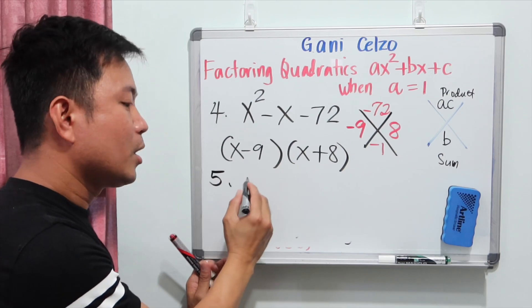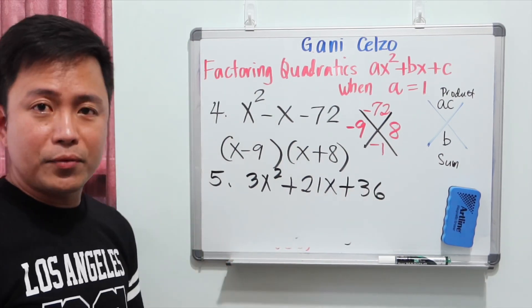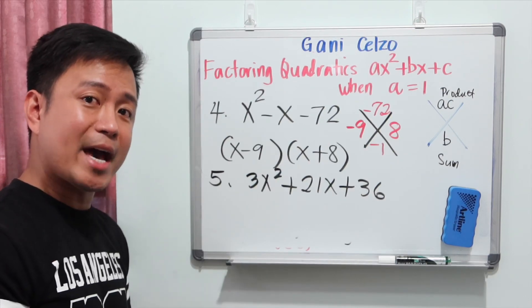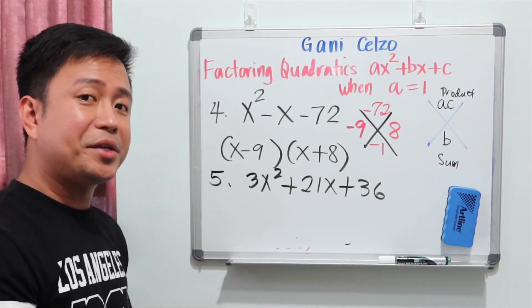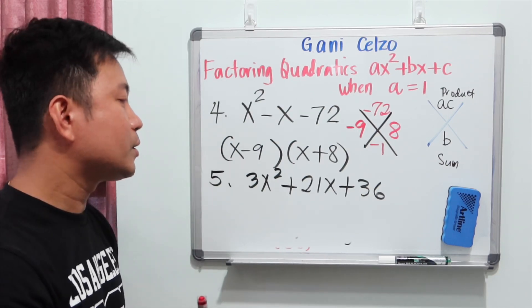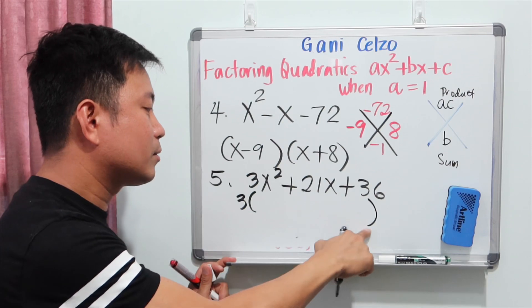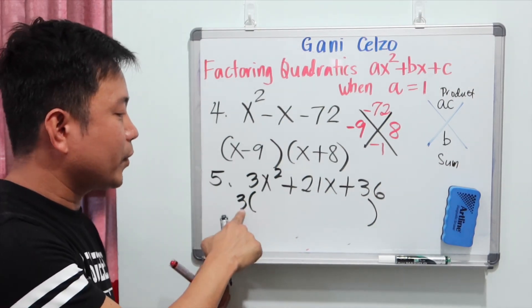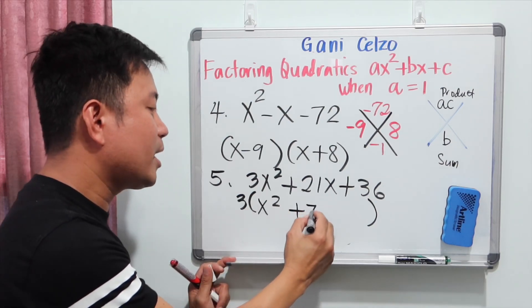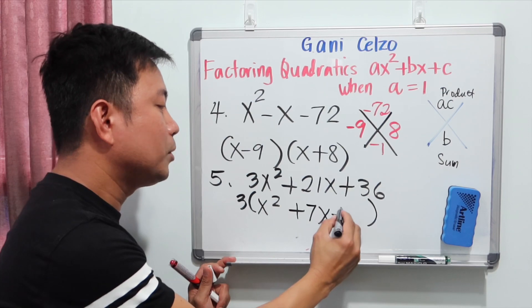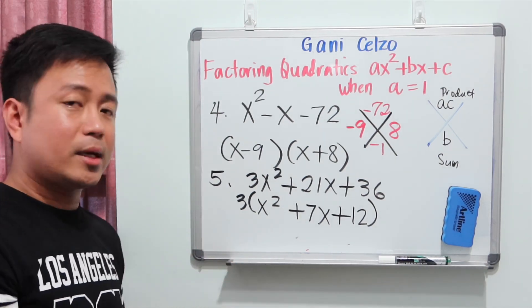Question 5: 3x squared plus 21x plus 36. When factoring, always ask yourself: is there a GCF — a greatest common factor? Looking at the three terms, 3x squared, 21x, and 36, the GCF is 3. So we factor out the 3 first and find the terms inside the parentheses. We multiply 3 by x squared to get 3x squared, 3 by 7x to get 21x, and 3 by 12 to get 36. So now we have 3 times the quantity x squared plus 7x plus 12.